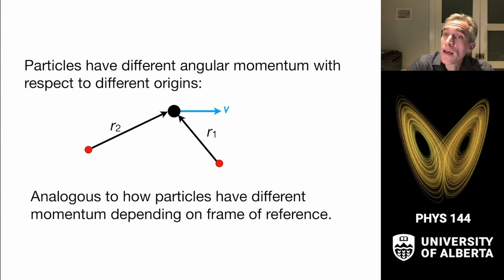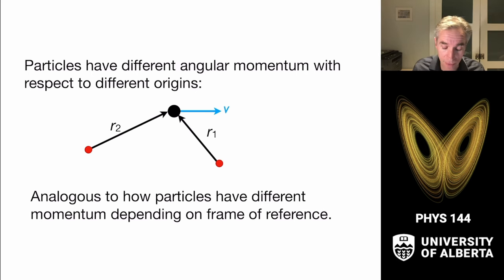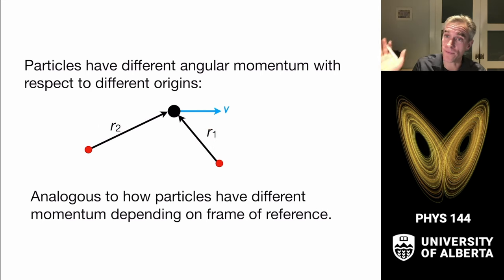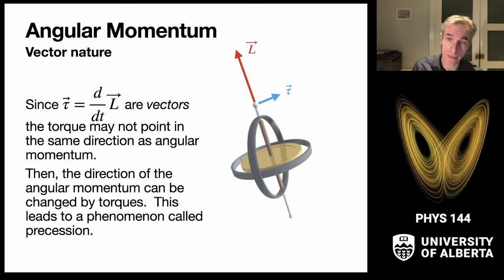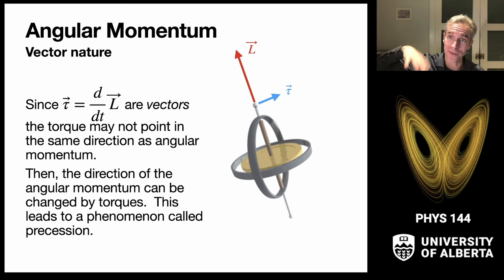Different observers see different angular momentum for a given particle. This is analogous to how different inertial frames see different linear momentum. You must pick an origin and calculate angular momentum relative to it. Angular momentum comes with this vector nature, which we'll explore more in class.